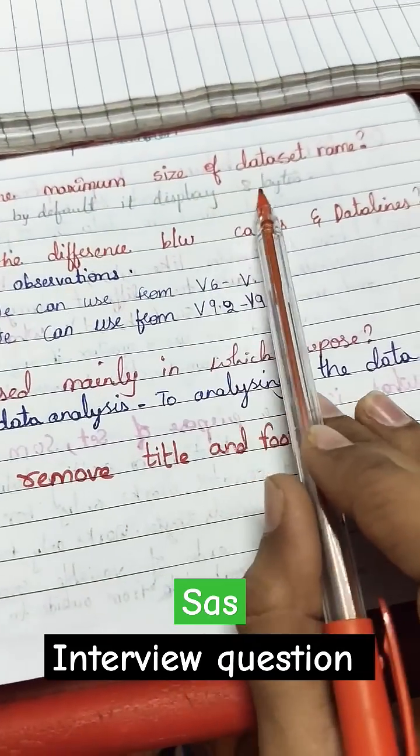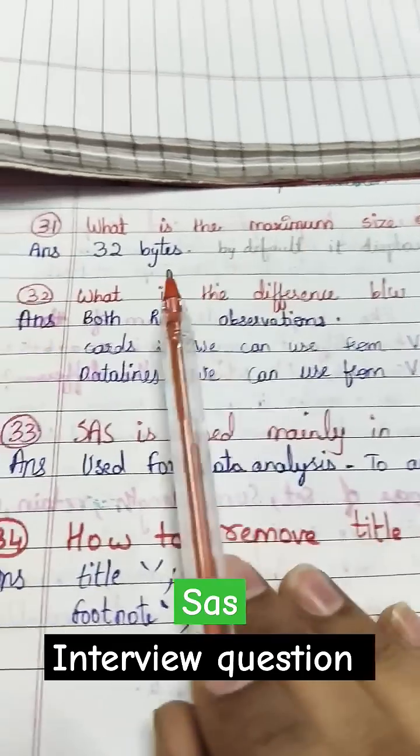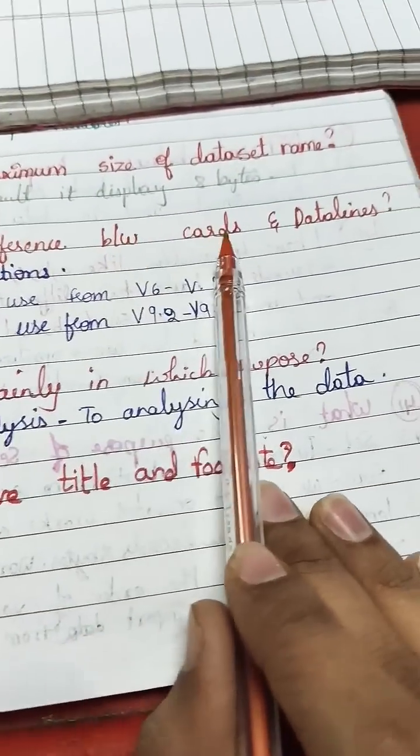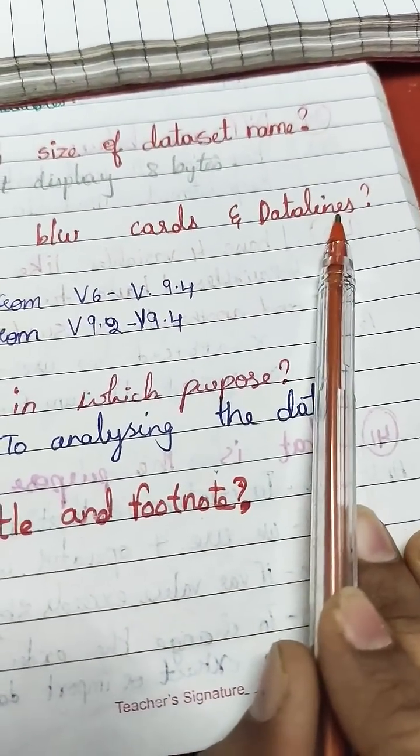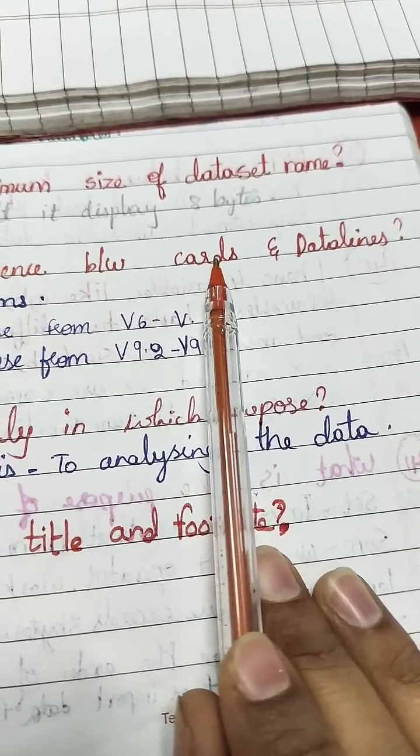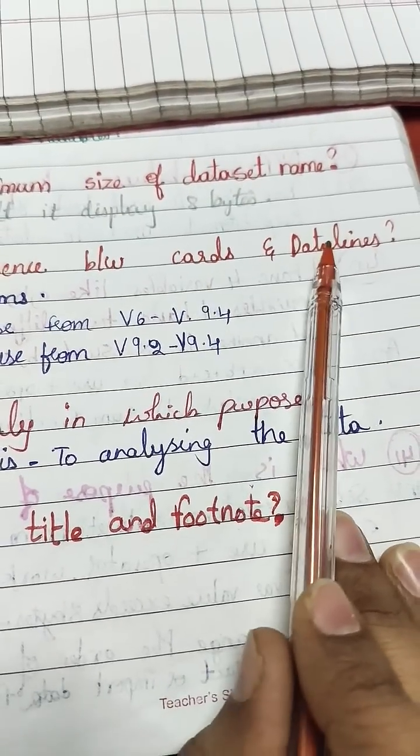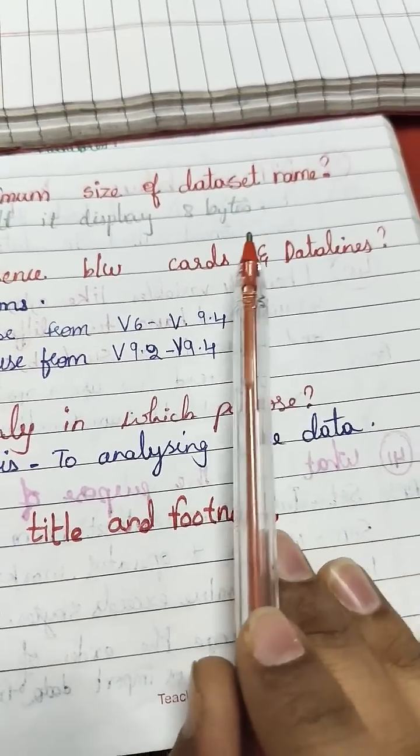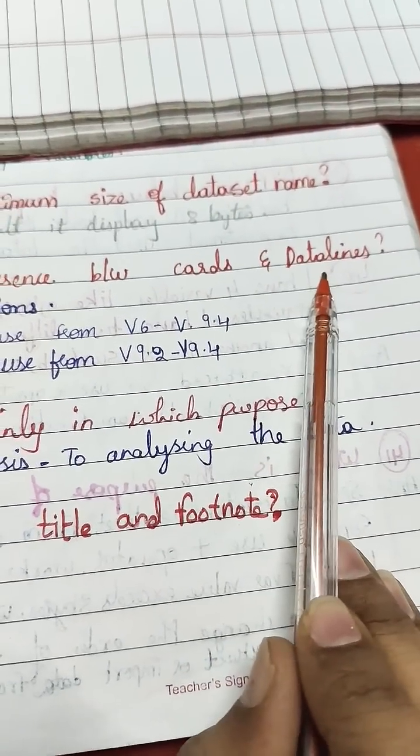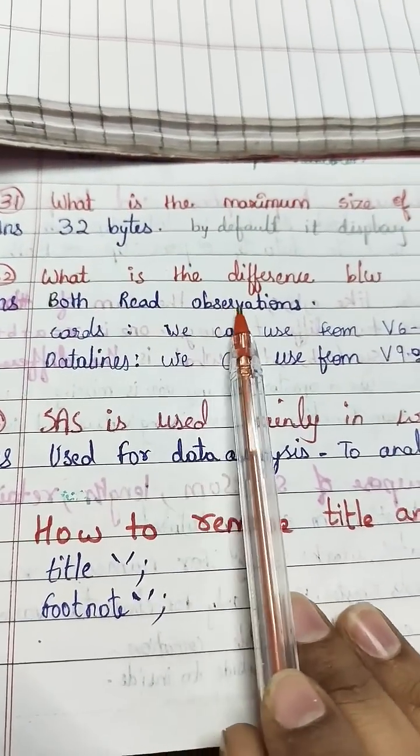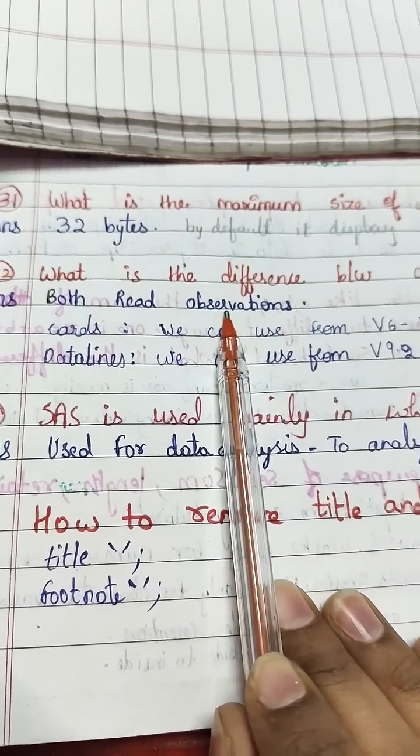What is the difference between cards and data lines? After inputs, we write cards or data lines. Both cards and data lines read the observations, while input reads the variables.